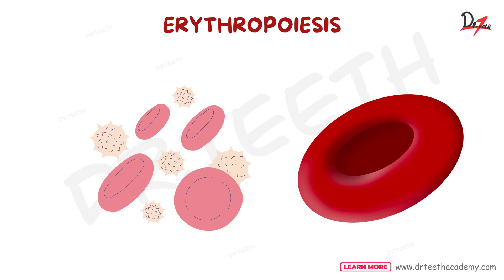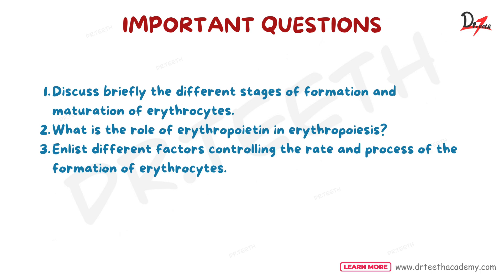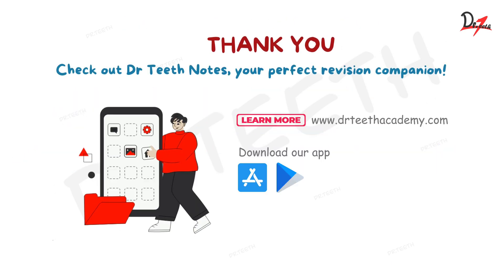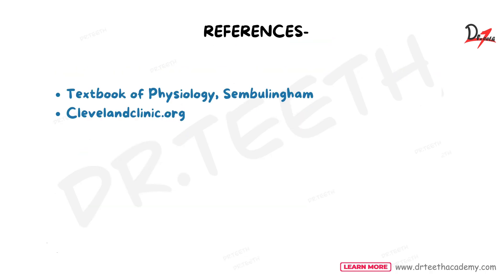In summary, this video covered the process of production of erythrocytes or RBCs, how all blood cells are formed by the same parent stem cell — the pluripotent hematopoietic stem cell — the different stages of maturation of erythrocytes, and the different factors controlling the rate of erythropoiesis. Important exam questions from this topic include: the stages of formation and maturation of erythrocytes, the role of erythropoietin in erythropoiesis, and the factors controlling the rate of erythrocyte formation. Continue revising with Dr. Teeth notes.